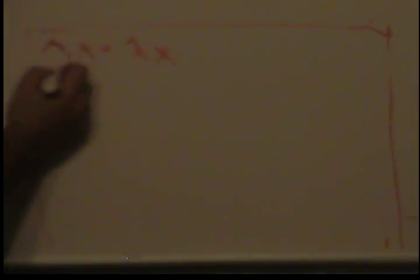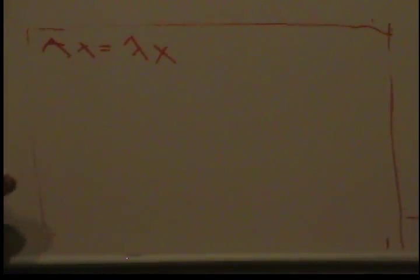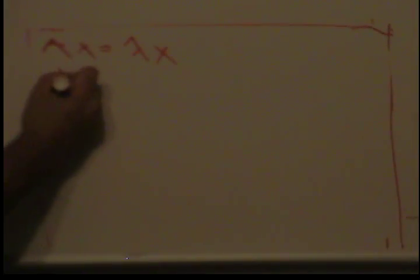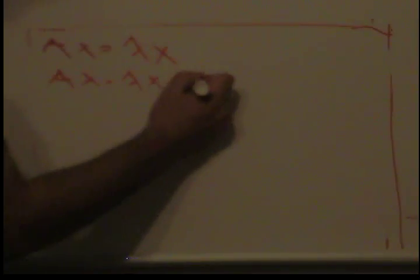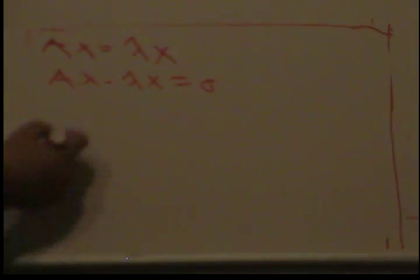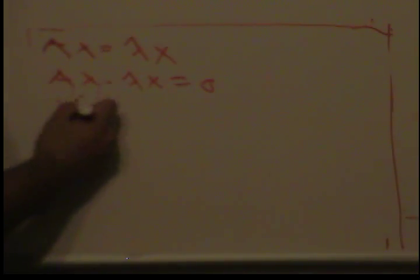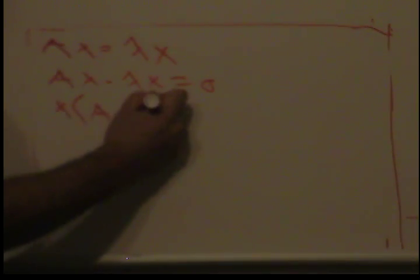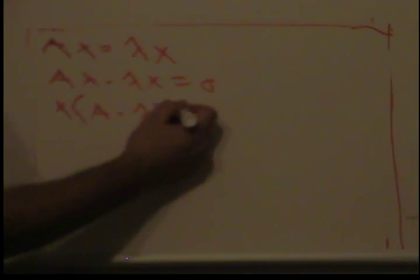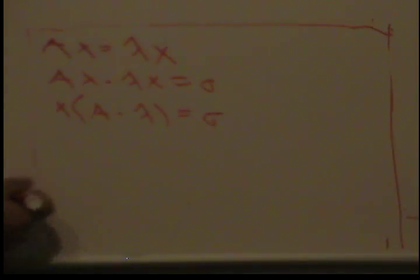If we subtract lambda x from both sides, we get Ax minus lambda x equals 0. If we factor out an x over here, we get A minus lambda equals 0, or this is the same thing as the identity matrix.